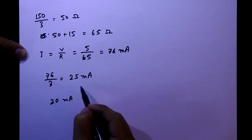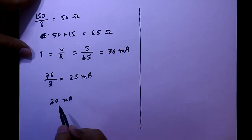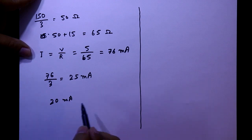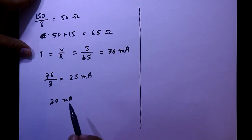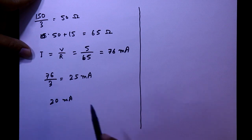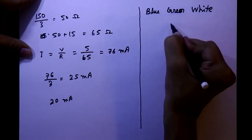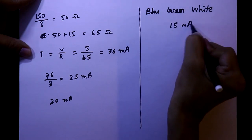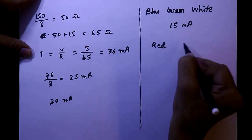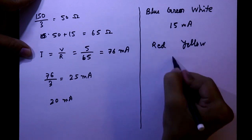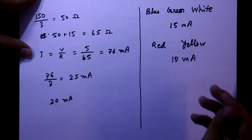The maximum value for an LED is 20 milliamperes, but we were getting 25 milliamperes — that is why the LEDs blew up. For some LEDs, you cannot even reach 20 milliamperes safely. That is why I do not use a 100-ohm series resistor with a 5-volt supply; I always use 220 ohms. For blue, green, and white, 15 milliamperes is the safe side; for red and yellow, 10 milliamperes is safe.